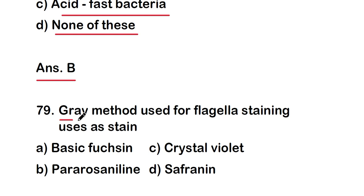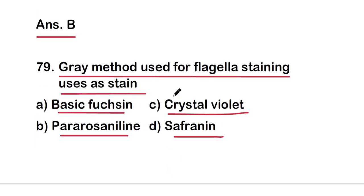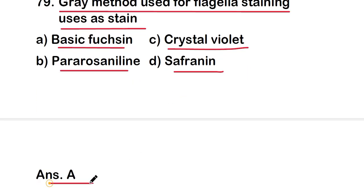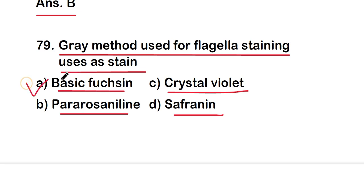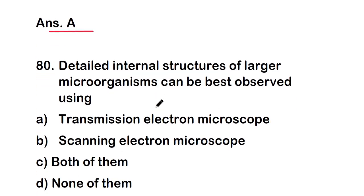Next question: the Gray method used for flagellar staining uses which stain — basic fuchsin, para-rosaniline, crystal violet, or safranine? The right answer is option A — basic fuchsin is used as the stain in flagellar staining in the Gray method.